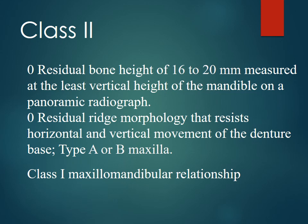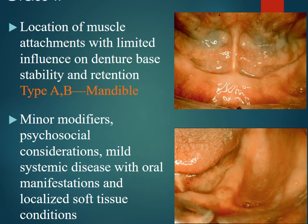In Class 2, the residual bone height is 16 to 20 mm measured at the least vertical height of the mandible on the panoramic radiograph. The residual ridge morphology that resists horizontal and vertical movement of the denture base is Type A or B of the maxilla, while the maxillomandibular relation is Class 1. Location of muscle attachments with limited influence on denture base stability and retention is Type A or B of the mandible.